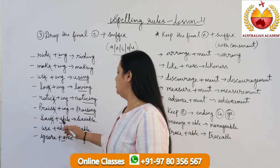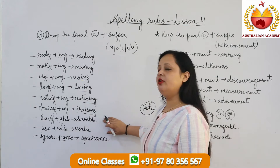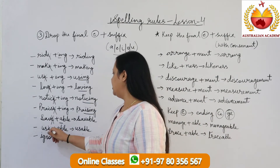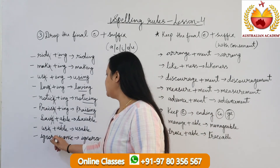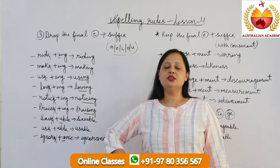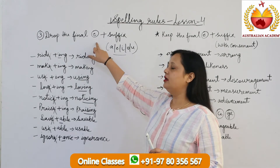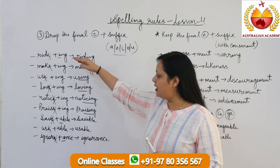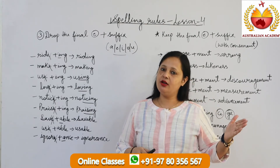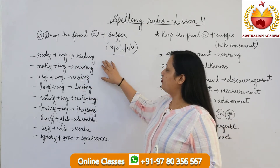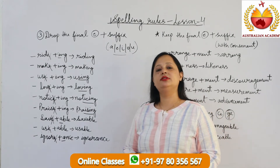Then 'save' plus 'able' — once you add 'able' to a word, we make it 'savable'. 'Use' plus 'able' is 'usable'. 'Ignore' plus 'ance' — we remove the 'e' and get 'ignorance'. So whenever a word ends with 'e' and you add a vowel suffix like 'ing', 'able', or 'ance', you remove that 'e'. So the results are: riding, making, using, loving, noticing, praising, savable, usable, and ignorance.